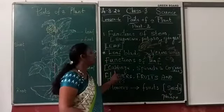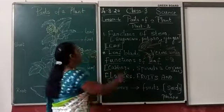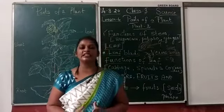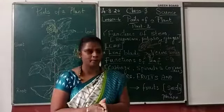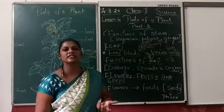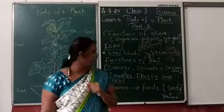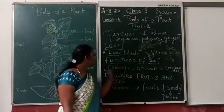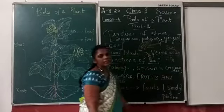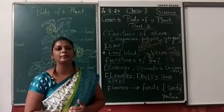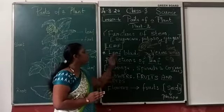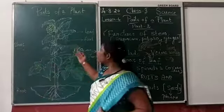Function of leaf — food can be stored in leaves. And function of stem — like sugarcane, the food is stored in the stem. Sugarcane, potato, ginger — these three are stems which we are consuming. And for function of leaf — leaves store food — that is cabbage, spinach, coriander. These are the leaves which we are eating, and the leaf has food stored inside it.